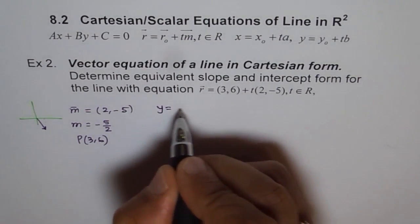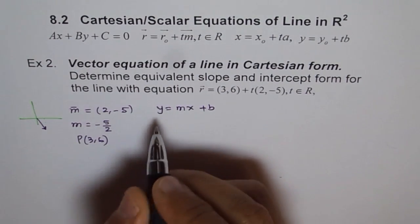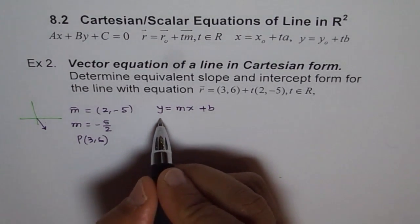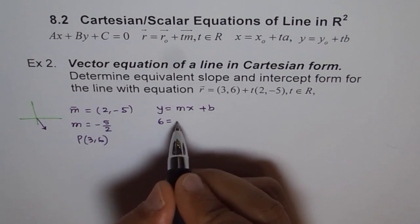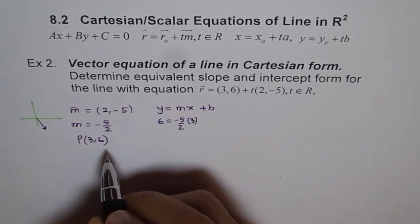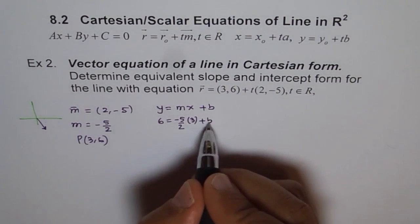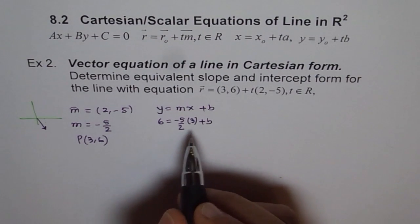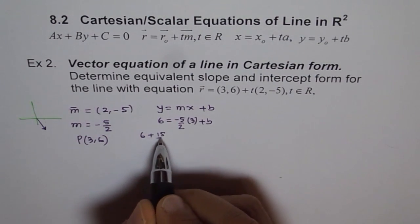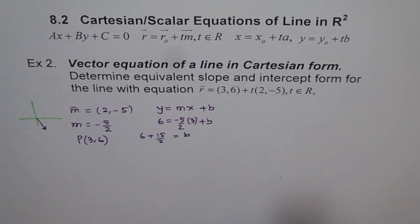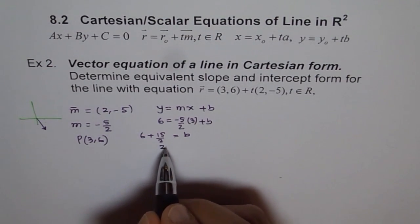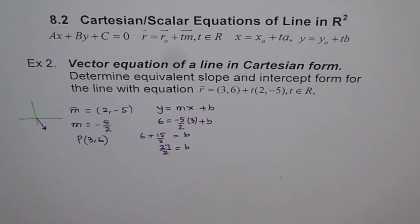Which is y equals to mx plus b, right? So to find b we will plug in this point 3 and 6. 6 is the y value. Slope is -5 over 2 for us. x is 3 for us. And b is to be found. So b is this. So we get b equals to 6 plus 5 times 3 is 15 over 2 and that is equals to b, right? So b is 12 plus 15 which is 27. 27 over 2 is the b part, right?